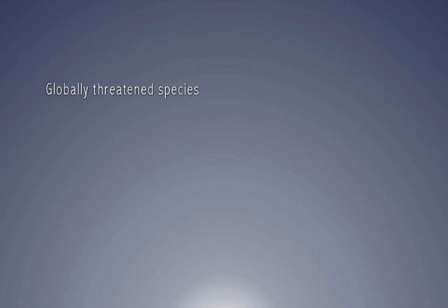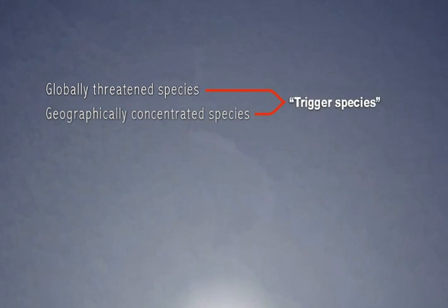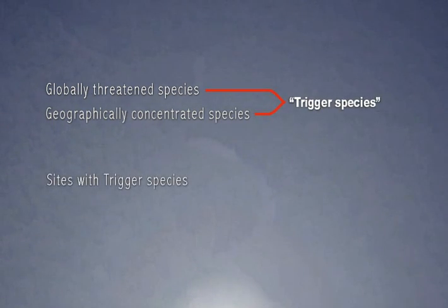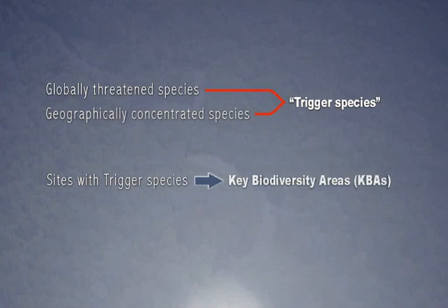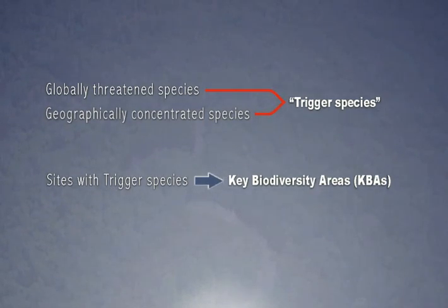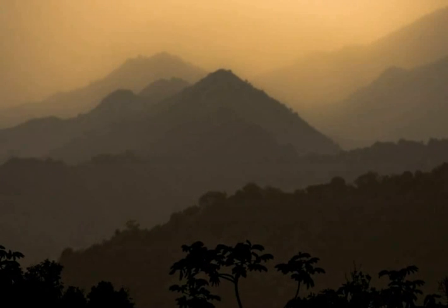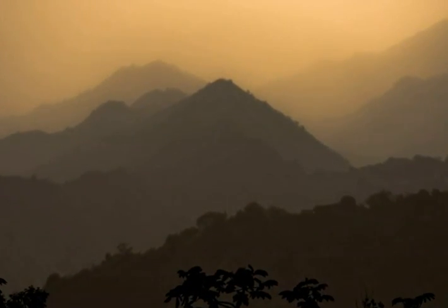Globally threatened species and geographically concentrated species are referred to as trigger species. Places containing trigger species are called key biodiversity areas, or KBAs. These sites of global conservation significance represent our targets at the site level. Key biodiversity areas are places known to contain trigger species.